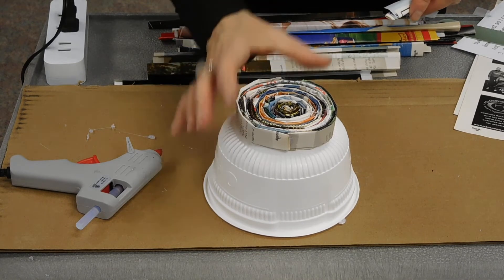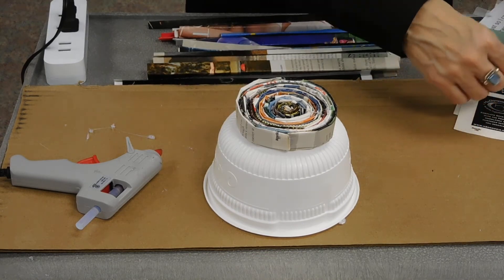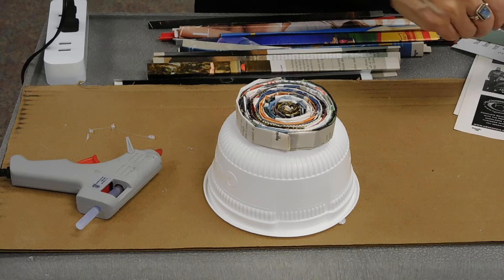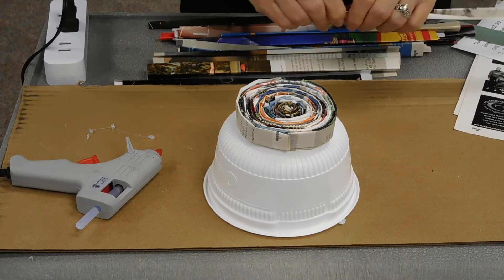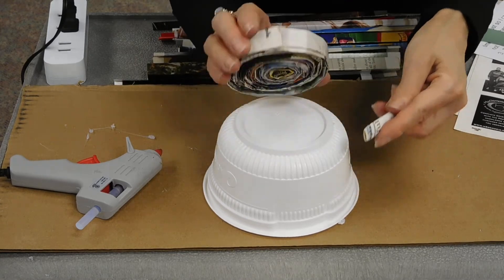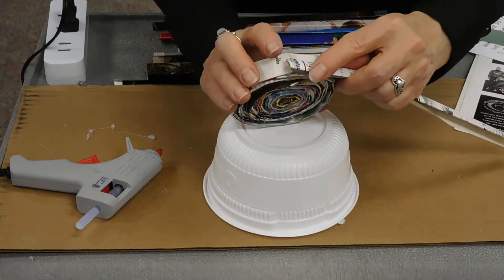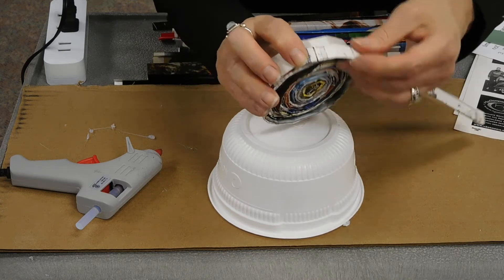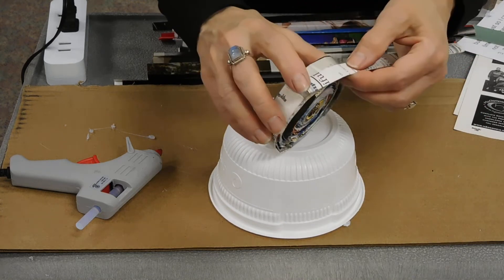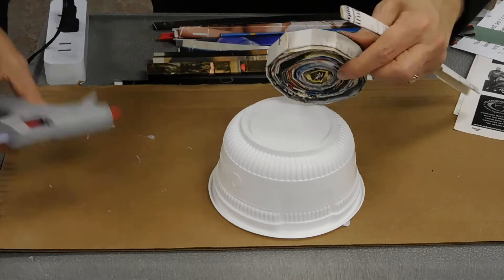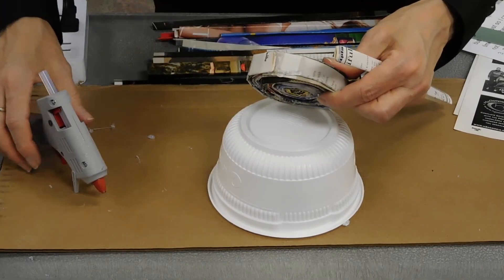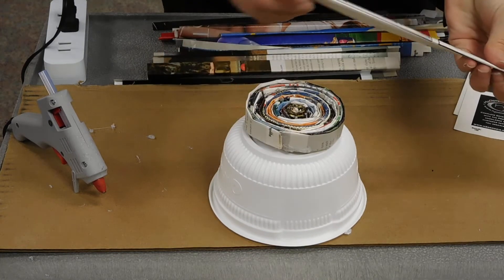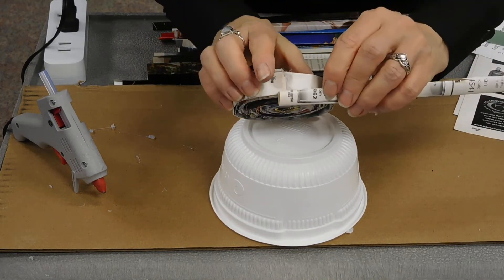I'm at the point where the diameter of the base of my bowl is as wide as I want it to be. So I'm going to start building the sides of the bowl. So to do that, I'm going to just come up a little and instead of going at the same level I was going at, I'm going to start building my sides.